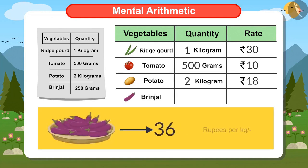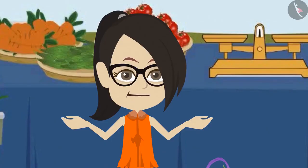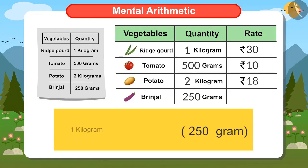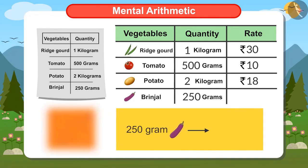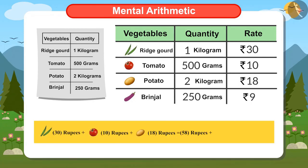Brinjal costs 36 rupees a kilo. What do I have to do to find the price of 250 grams of brinjal? 250 grams is a quarter of a kilo, so to find the value of 250 grams of brinjal, we have to divide the price of a kilo of brinjal by 4. That means 36 divided by 4. Four nines are 36, so the price of 250 grams of brinjal is 9 rupees. Now I will add 9 rupees to 58 rupees, and the answer will be 67 rupees.